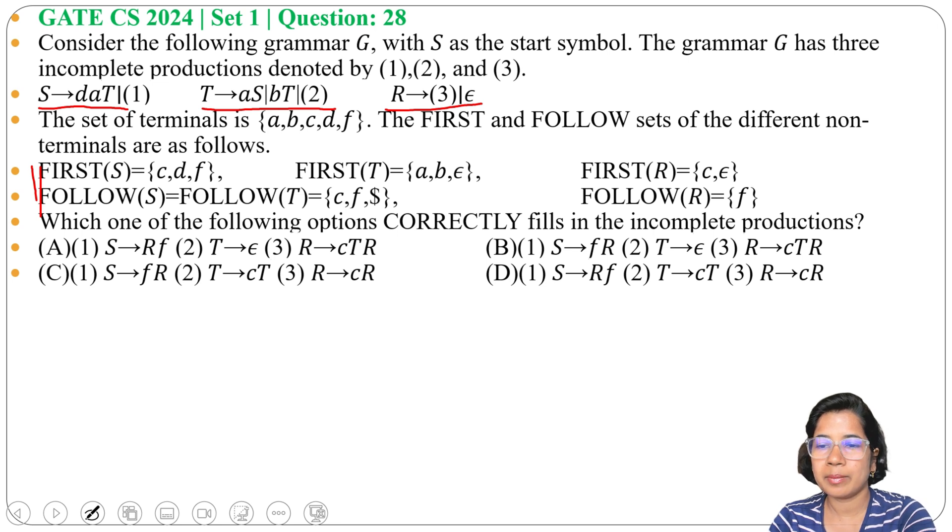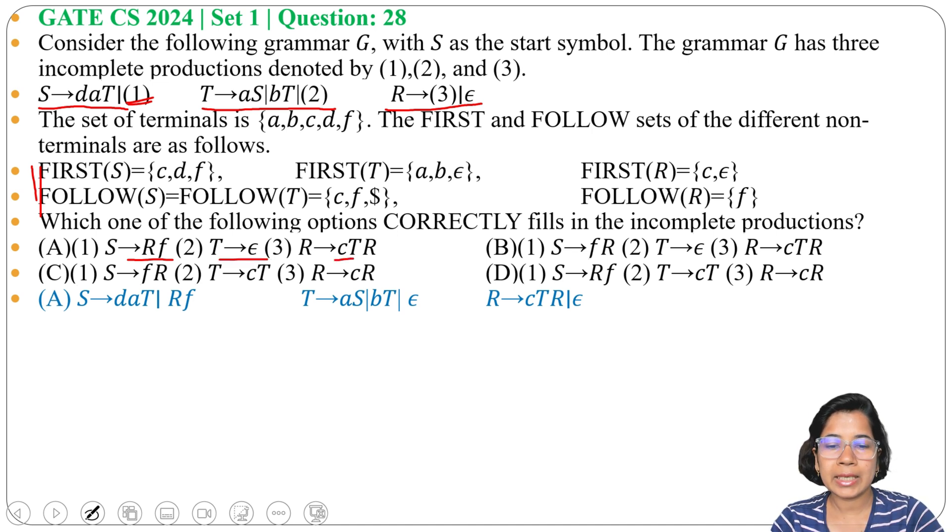Now option A: S→dAT, in place of 1 we will write RF. Then T→aSbT or Epsilon. Then R→cTR or Epsilon. We got the grammar.